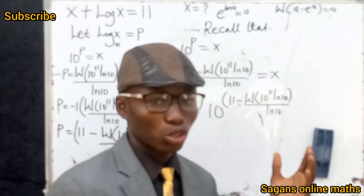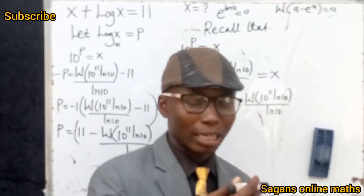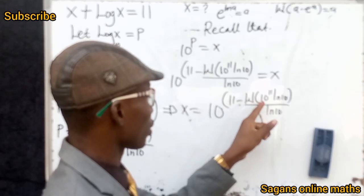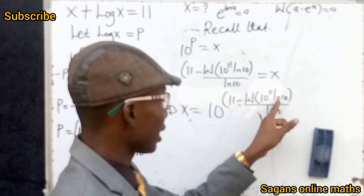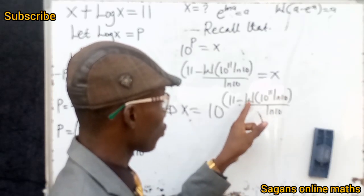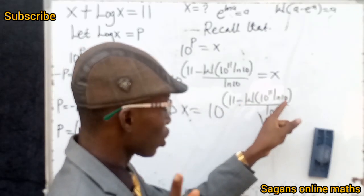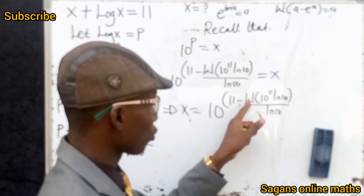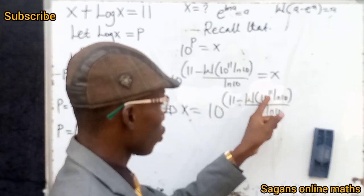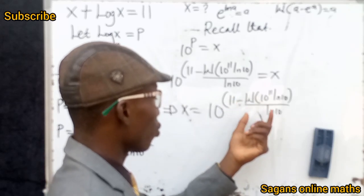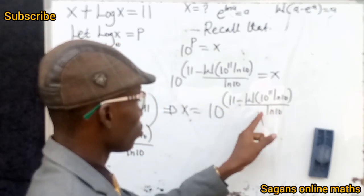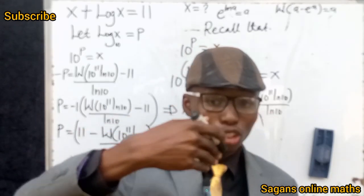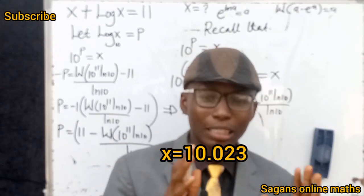Not all calculators have the Lambert W function, so the final answer is: x = 10^(11 - W(10^11 · ln10) / ln10). To evaluate numerically, first take W(10^11 · ln10), divide by ln10, subtract from 11, then raise 10 to that power to get x. Take note and do not incorrectly cancel the ln10.